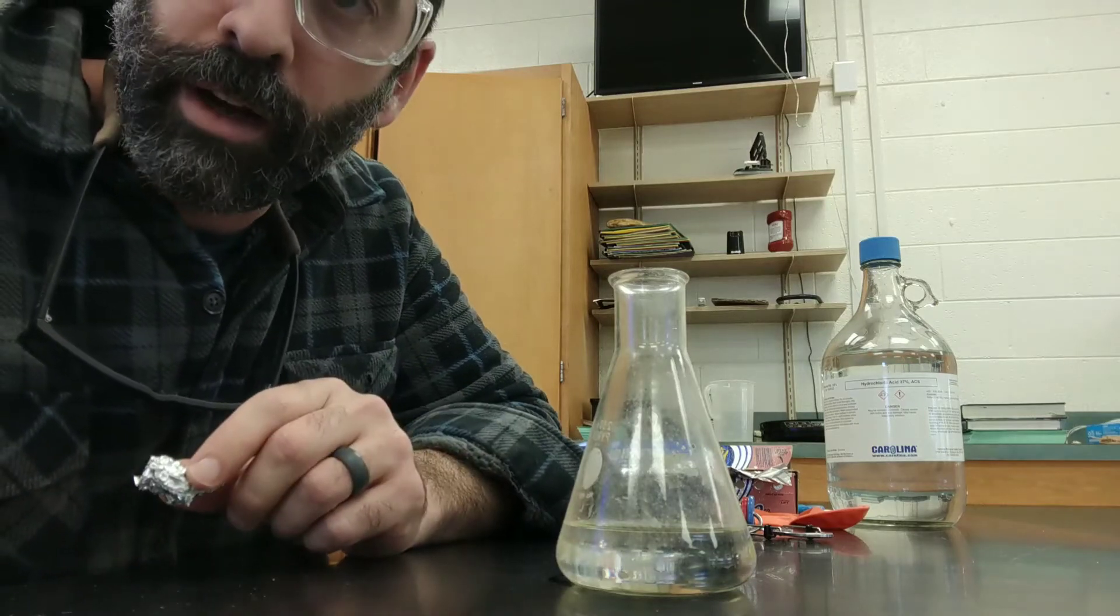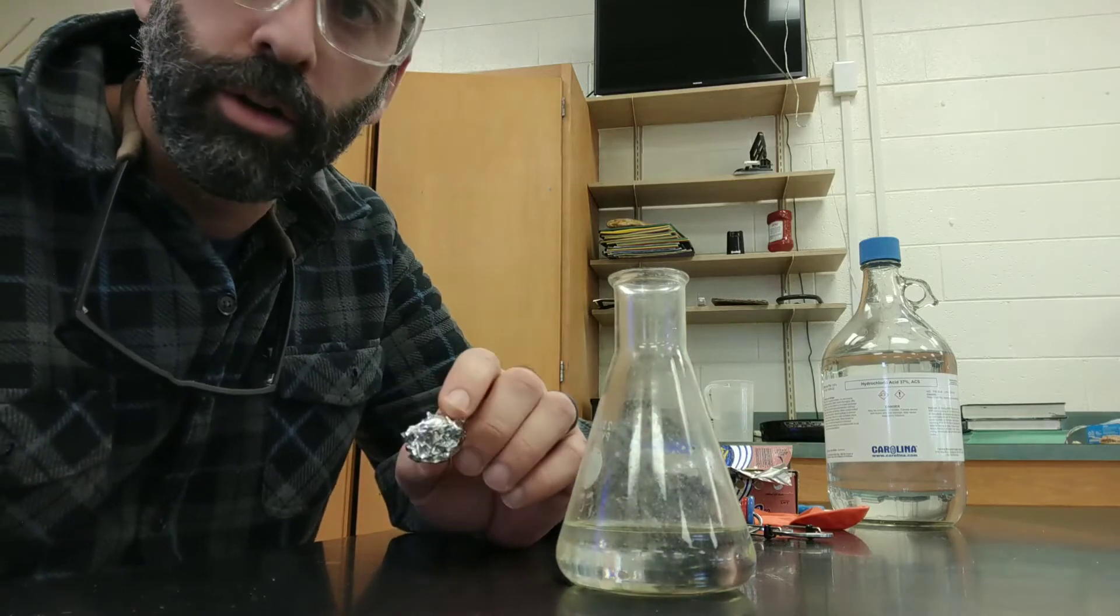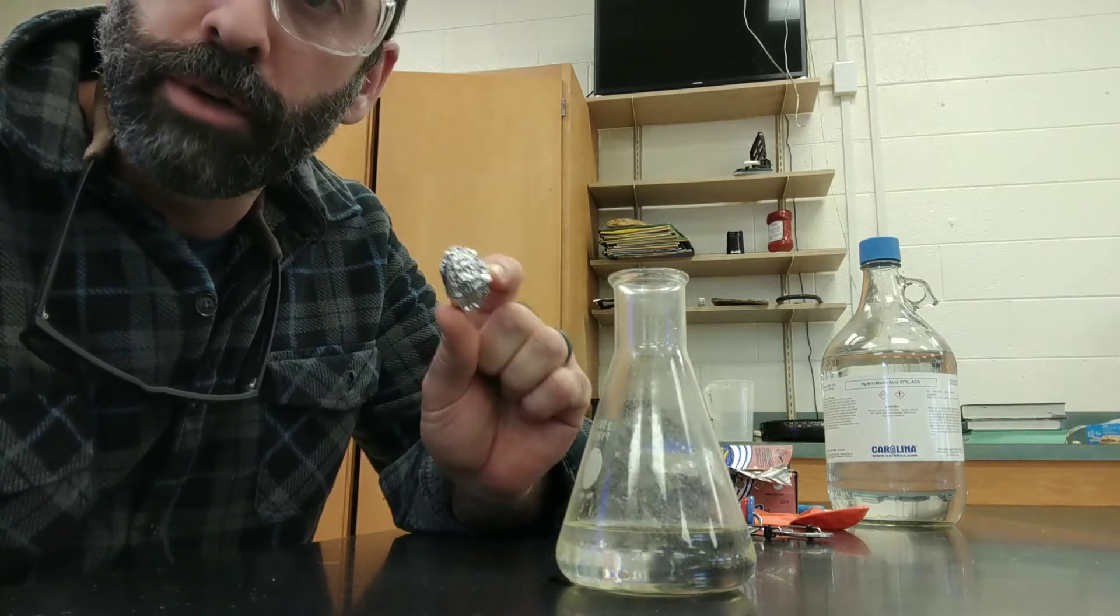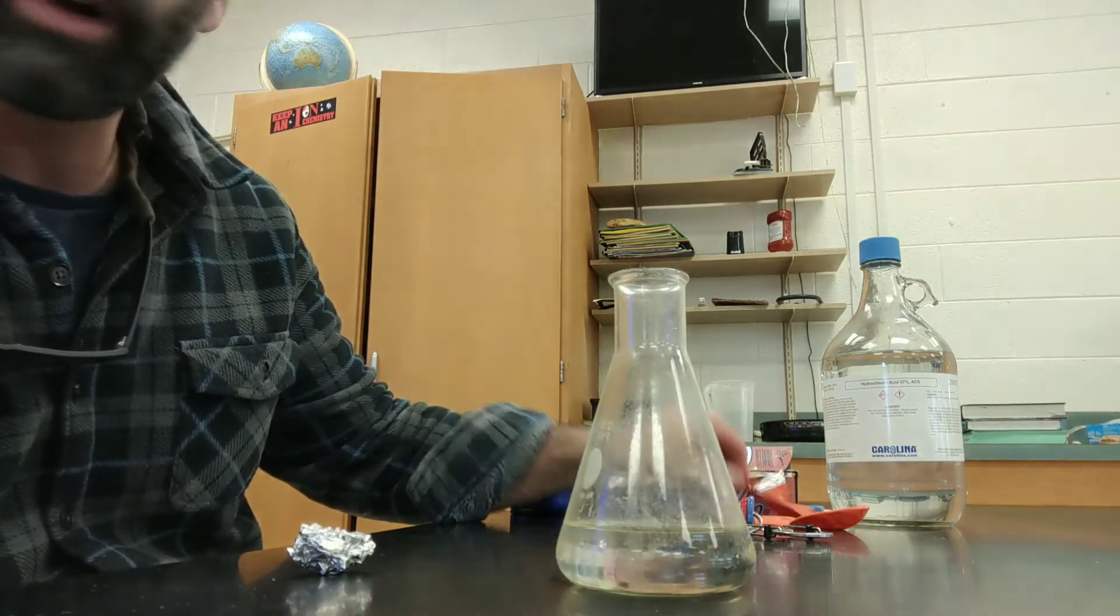I've got about 100 milliliters of hydrochloric acid in the Erlenmeyer flask. I've also got a ball of aluminum foil that's 10 centimeters by 10 centimeters, and I've got the balloon ready to go.